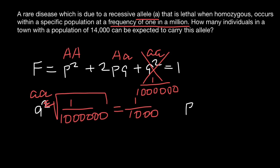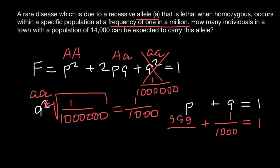In this population we have only two alleles, p and q. Since all alleles combined must equal one, p + q = 1. We already found the frequency of the q allele, which is 1/1,000. That gives us the frequency of the dominant allele p = 999/1,000. Adding these two numbers gives us one, confirming the result. In our formula, p stands for the dominant allele and q for the recessive allele A.